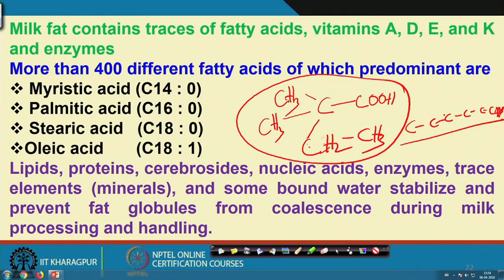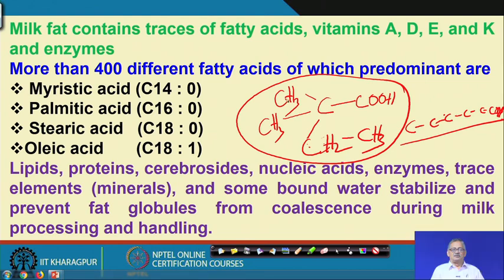So more than 400 different fatty acids are in milk. The predominant ones are myristic acid (C14, no double bond), palmitic acid (C16, no double bond), and stearic acid (C18, with one double bond). So around 400 different fatty acids are present in milk, of which the predominant ones are C14, C16, and C18 — with single or no double bonds — they are saturated or mono-unsaturated.